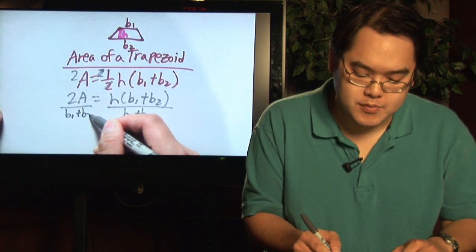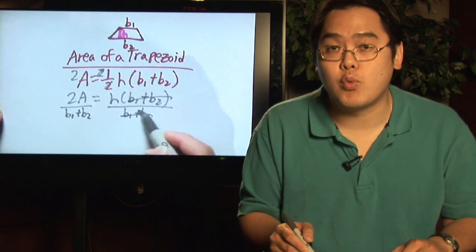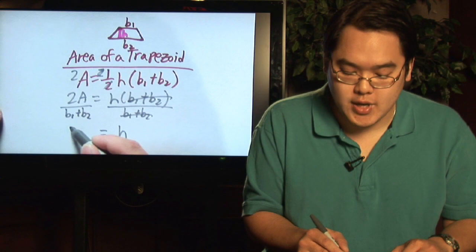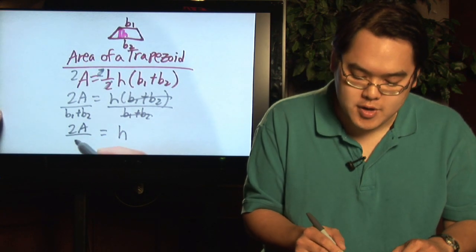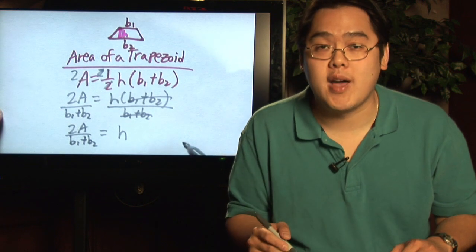B1 plus B2. So what will happen here is that the B1 plus B2's will cancel out on the right-hand side and you'll have h. And on the left, you have 2A over B1 plus B2, and you now have height by itself.